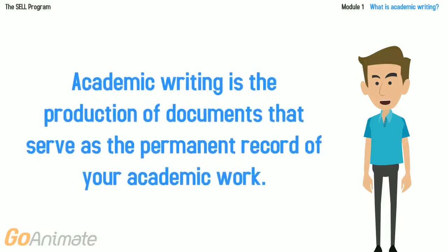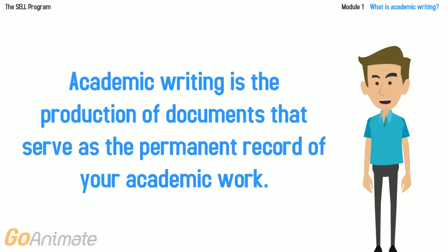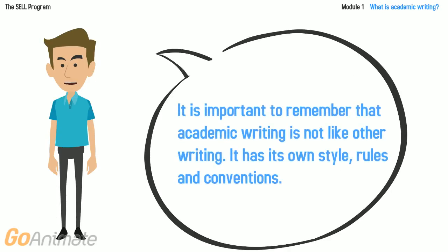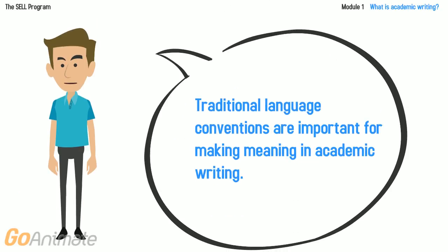Academic writing is the production of documents that serve as the permanent record of your academic work. It is important to remember that academic writing is not like other writing — it has its own style, rules and conventions. Traditional language conventions such as grammar, punctuation and spelling are important for making meaning in academic writing.